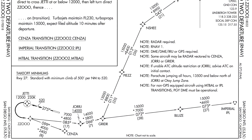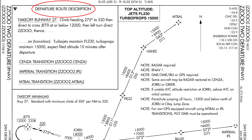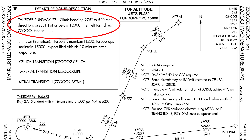Let's take a look at a SID out of San Diego International Airport. This SID is called the Zoo 2, referencing the local San Diego Zoo. The transition we will use is Mount Baldy. The first thing to look at is the departure route description located on the upper left — this description will clearly spell out all the procedures you need to follow. For the Zoo 2 we only have instructions for a runway 27 departure. Upon takeoff we'll climb with a heading of 275 at 500 feet per nautical mile to reach 520 feet, then crossing the JETTY waypoint at or below flight level 120 and not exceeding a speed of 230 knots.